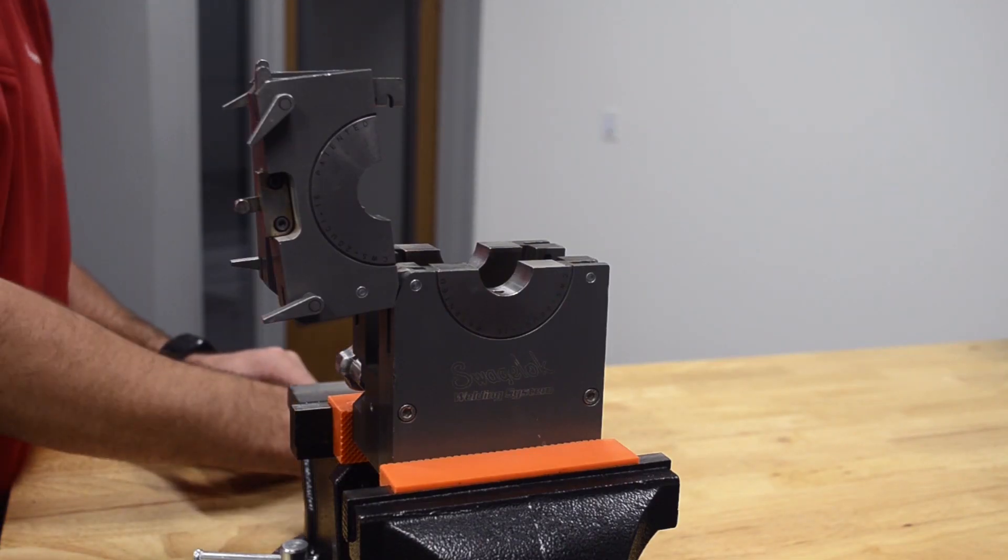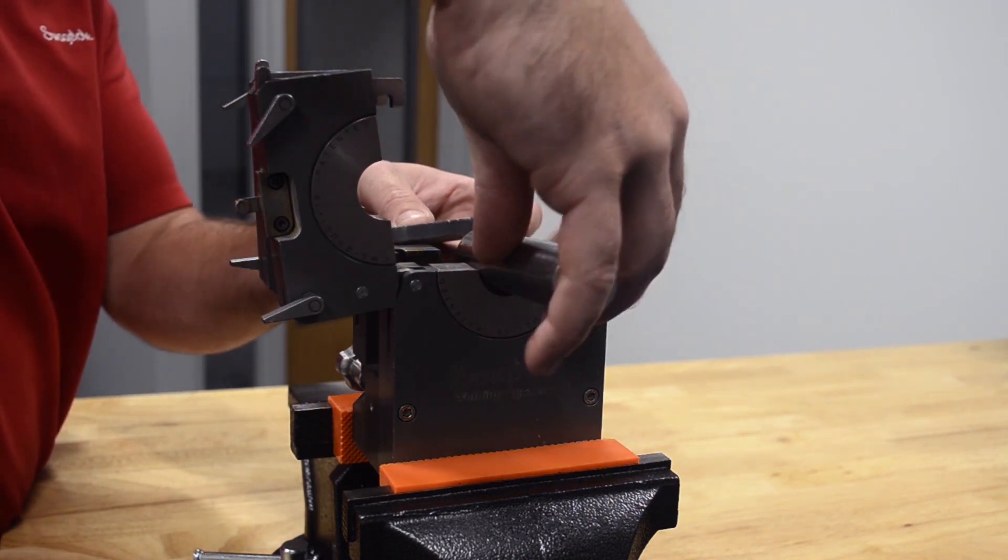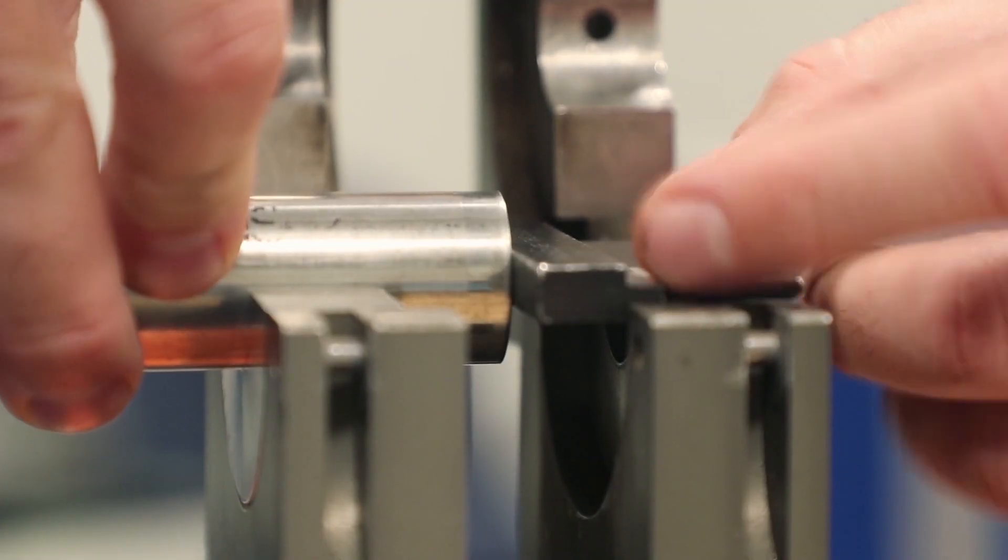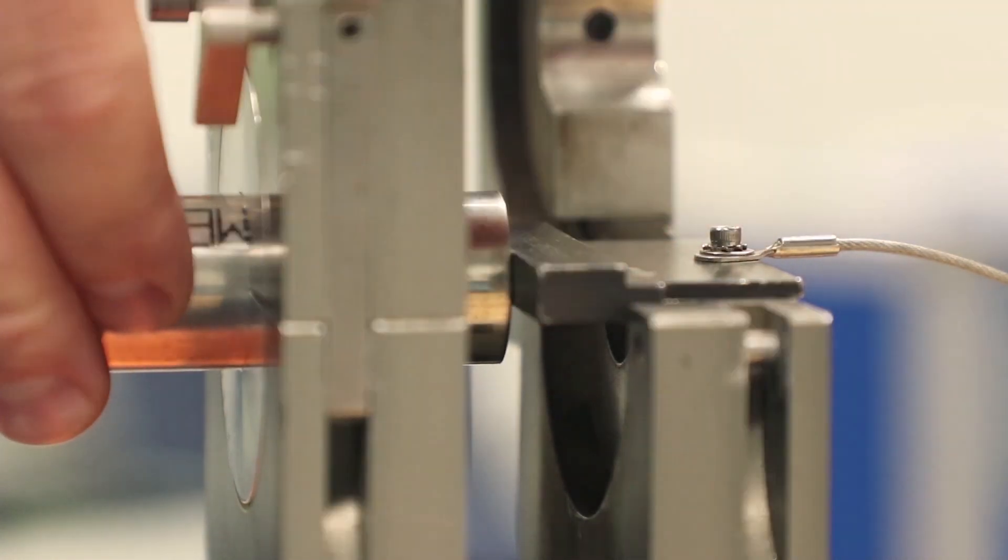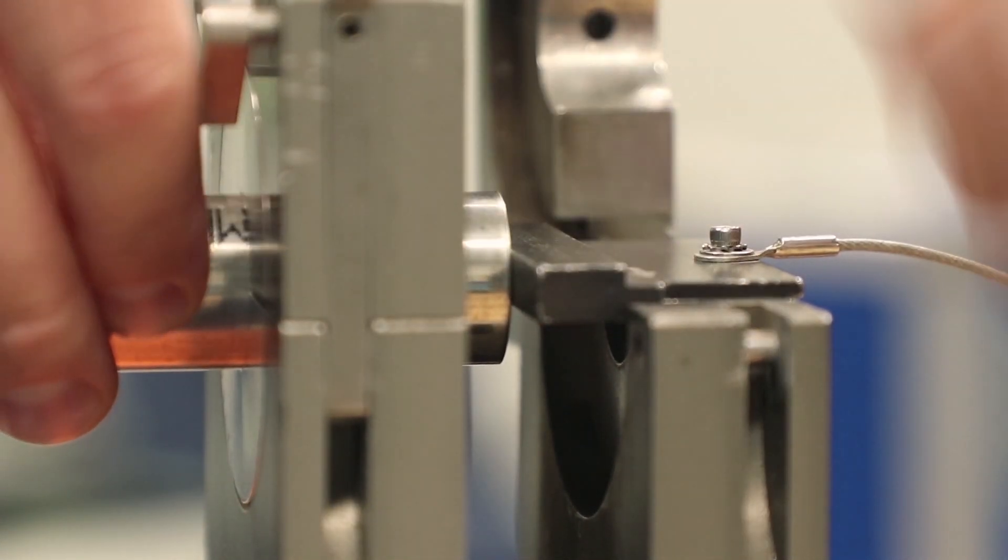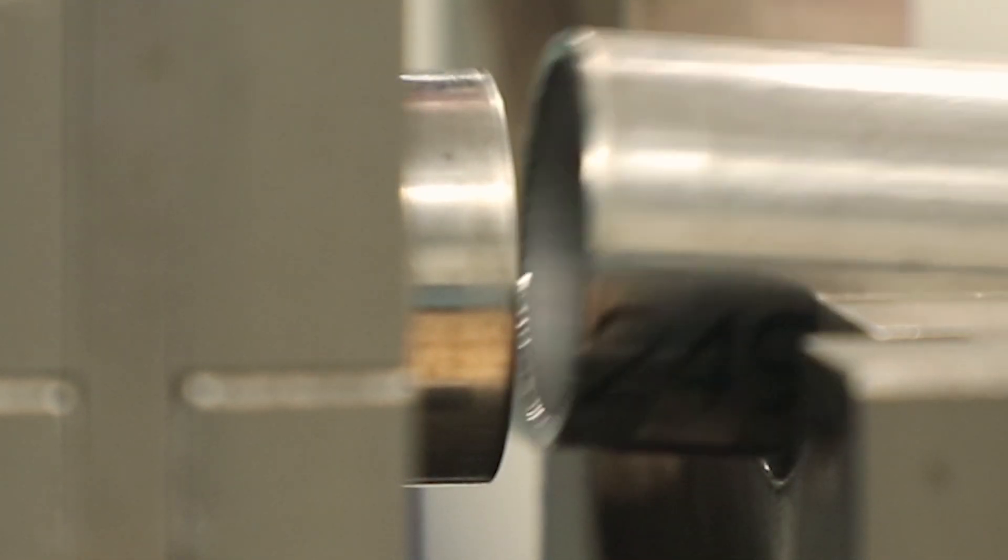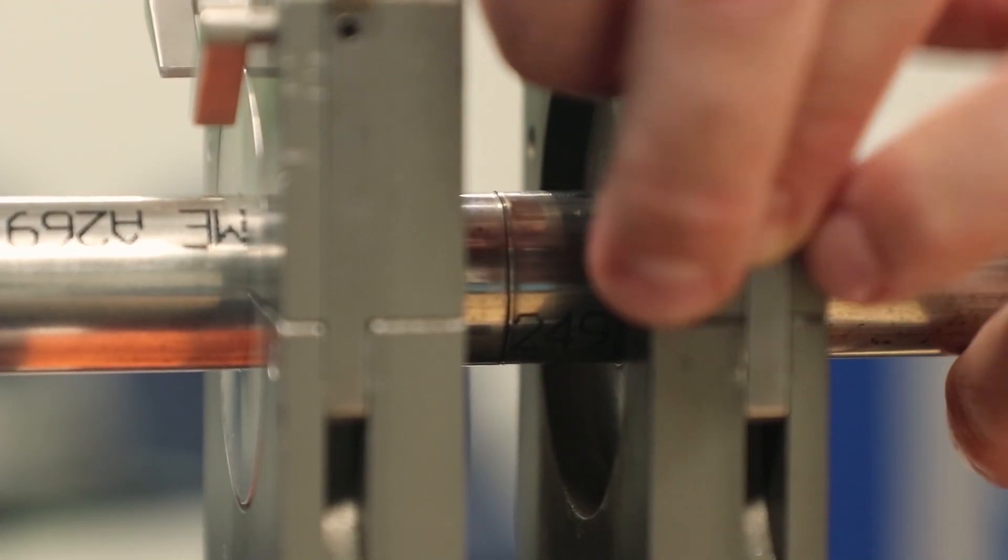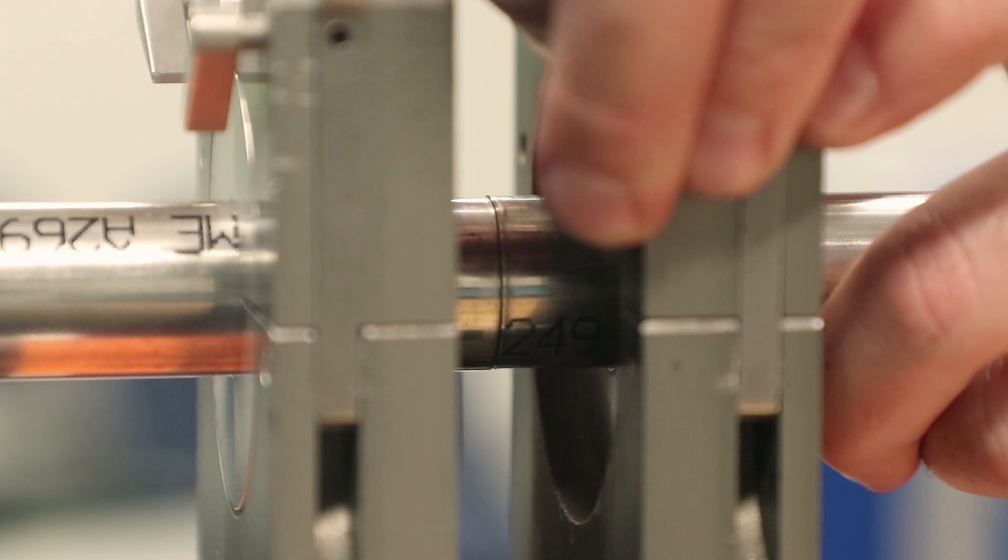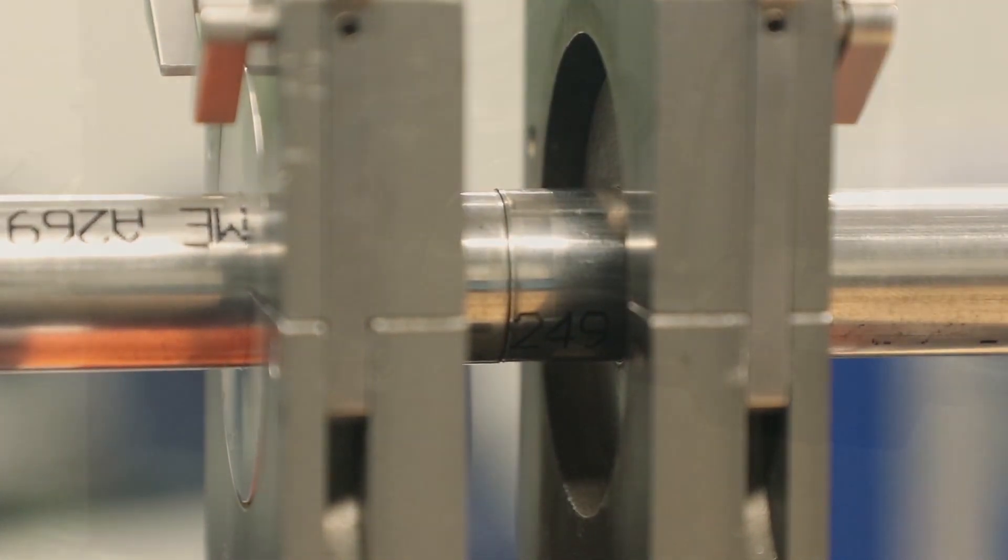Once the fixture block is prepared and all your other prep work is done, one of the last steps is to put the tubing into the fixture block. This is simplified using a Swagelok centering gauge. This gives your first piece of material a reference point so that it's right in the middle of the fixture block. When the second piece is inserted, it butts right up against the first piece, and that's how we ensure that joint is centered in the fixture block.